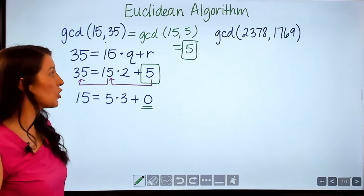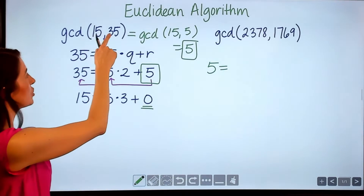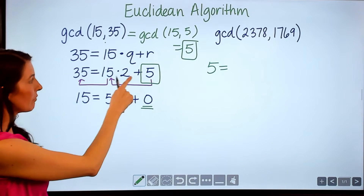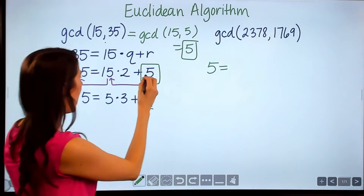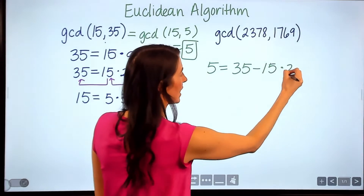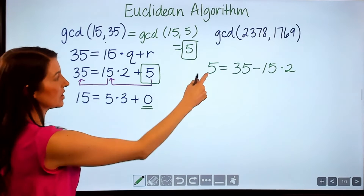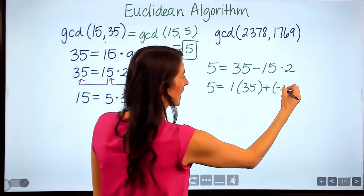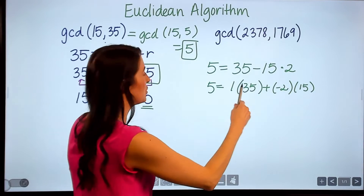Now I want to show you how to write this greatest common divisor as a linear combination of these two numbers. Using this step, 5 is equal to — I'm going to subtract the 15 times 2 — so 5 equals 35 minus 15 times 2. That's how I can see that 5, the greatest common divisor, is equal to 1 times 35 plus negative 2 times 15, written as a linear combination of the two integers in the original problem.